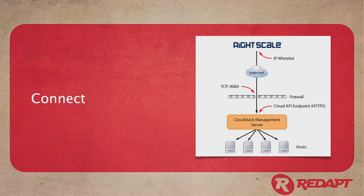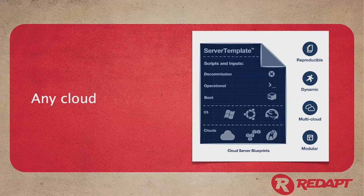Next thing is connecting RightScale. This is probably the easiest part of the setup — it's a matter of logging into your console, going in and adding a new cloud, and putting your management server URL in there. Very simple. While you're logged in, go into one of the multi-cloud images and start building out your RightScale images for your private cloud.